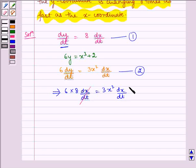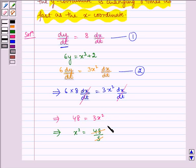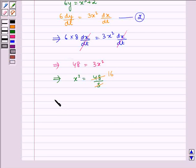Now, dx/dt gets cancelled, so it implies 48 equals 3x squared. This implies x squared equals 48 divided by 3, which is 16, which implies x is equal to plus or minus 4.